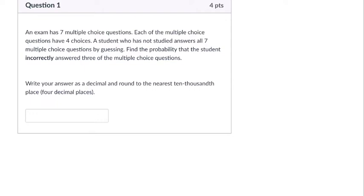Okay, so in this problem, we're told there are seven multiple choice questions on a test. Each of them has four choices, and we want to know what's the probability that you would get three of them incorrect.